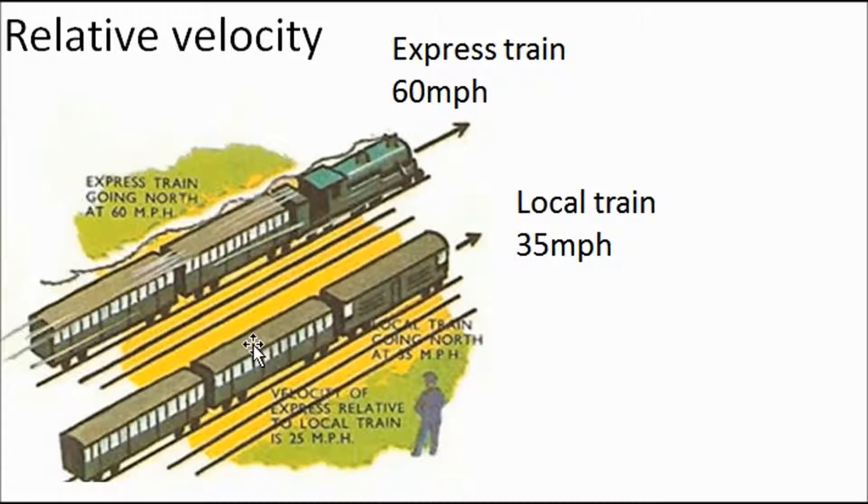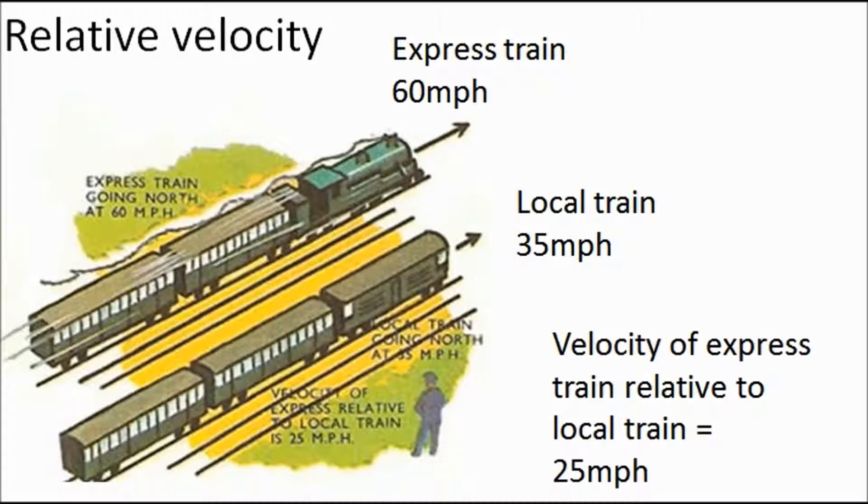Now, you're already doing 35 miles per hour. So what you do is you just subtract that from here. That train is going to look like it's doing 25 miles per hour. It's going 25 miles per hour faster than you. So it's going to look like it's doing 25 miles per hour. So to this guy, it looks like it's doing 60. To a passenger on this train, it would look like it's doing 25 miles per hour.